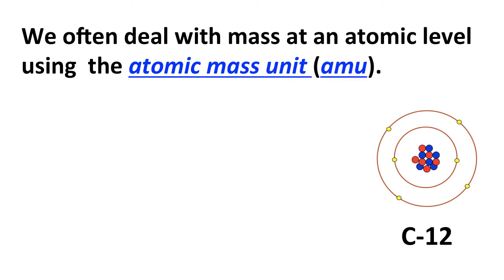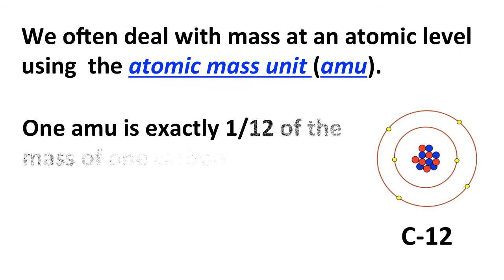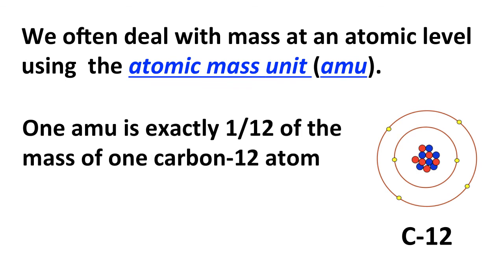Now, when we deal with mass at atomic level, we're typically going to use units or often going to use units called atomic mass units symbolized by AMU. And AMU is defined as exactly one twelfth of the mass of one atom of carbon-12, that particular isotope of carbon. And if you prefer things like grams, one AMU is about 1.6605 times 10 to the minus 24 grams.